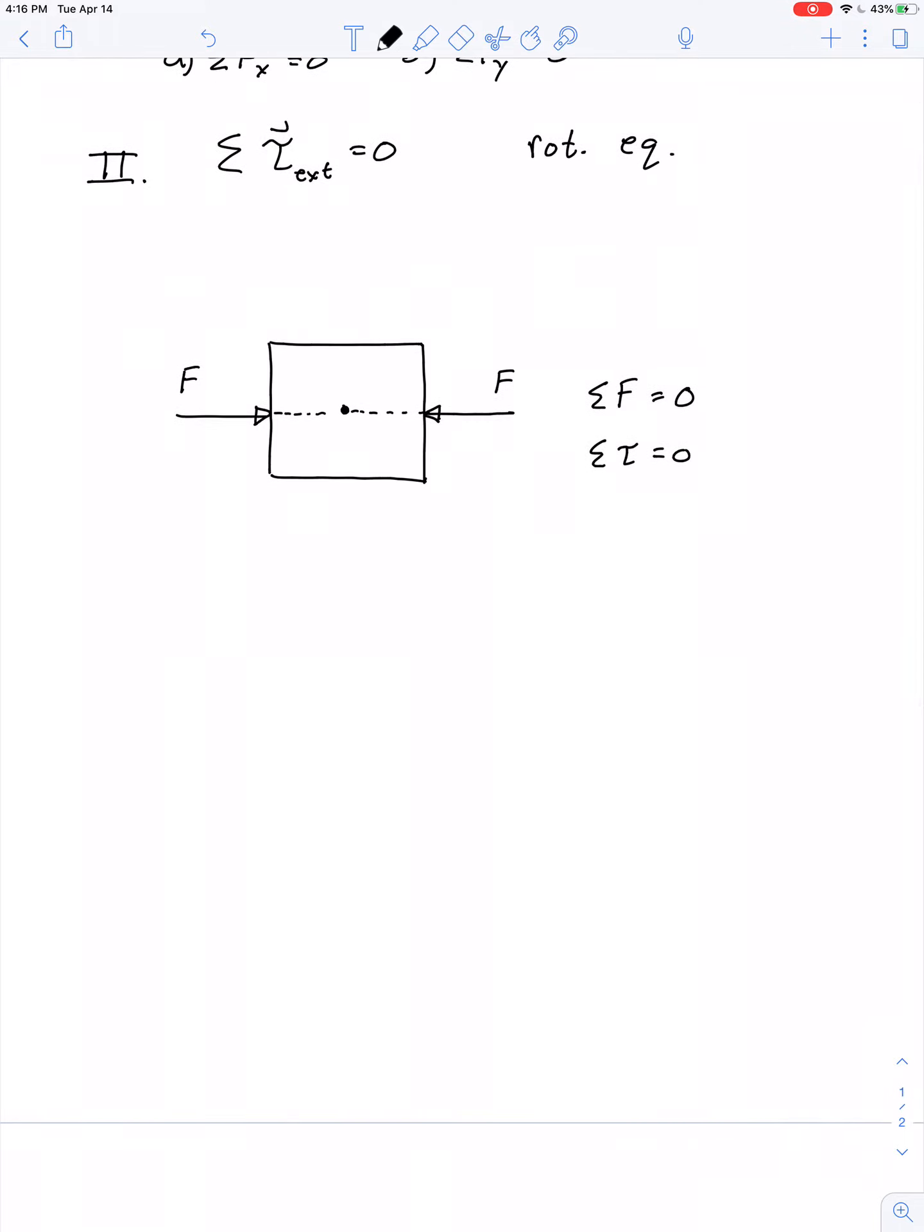Now, what if you took those same two forces applied to the same object, but you changed the location? So the center of mass is still shown at the geometric center. And the two forces still oppose each other, equal magnitudes in opposite directions.